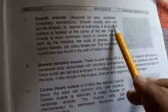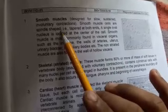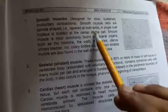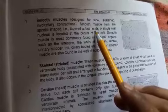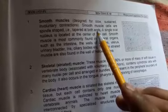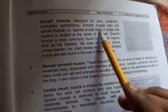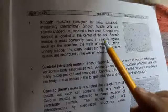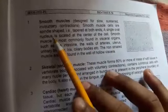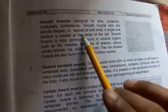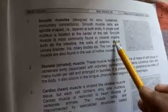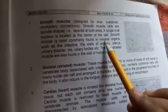Smooth muscle cells are spindle-shaped. Spindle-shaped mein smooth muscles hote hain — tapered dono taraf se. Humne class mein board pe spindle shape banaya tha, aap dekhe honge. A single oval nucleus is located at the center of the cell — ek single oval nucleus, cell ke center mein sthaapit hota hai.